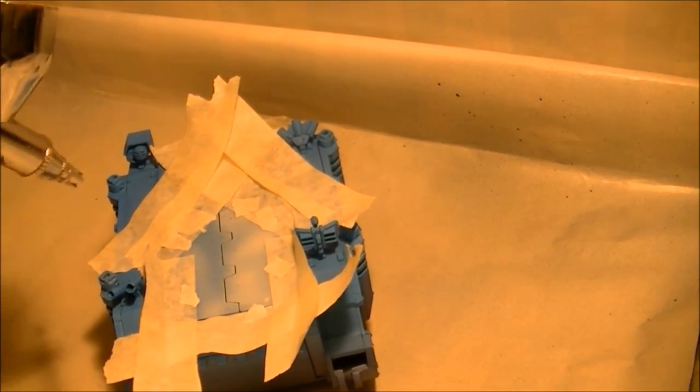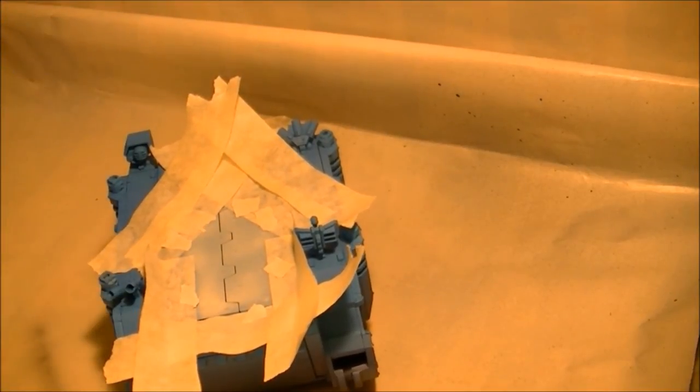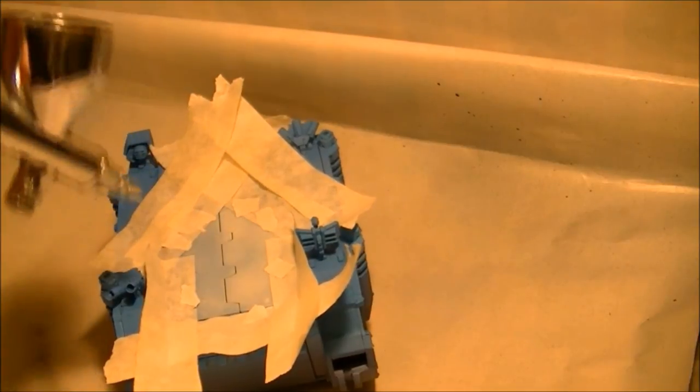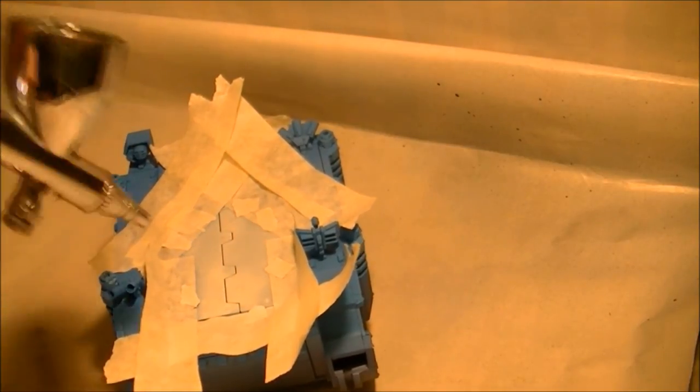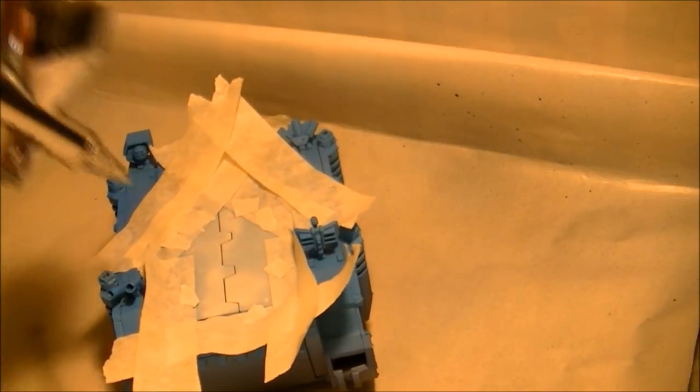I'm just going to spray over this with white. Now because we're putting white over a blue base colour, this is going to need a couple of coats. I'm just going to give it a light coating, quick dusting and then the next coat I'll come on, I'll start building up the layers just making them gradually thicker.